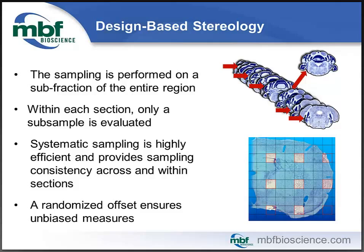Design-based stereology is the process of obtaining unbiased, meaningful, quantitative estimates of three-dimensional properties from two-dimensional information. It makes no assumptions of size, shape, orientation, or distribution. The sampling is performed on a sub-fraction of your entire region of interest, meaning that only some of the sections that display your region of interest will be analyzed, and of those sections, a fraction of the region of interest on each section will be quantified. This systematic sampling is highly efficient and provides sampling consistency across and within sections. A randomized offset provided by software like Stereo Investigator ensures unbiased measures.